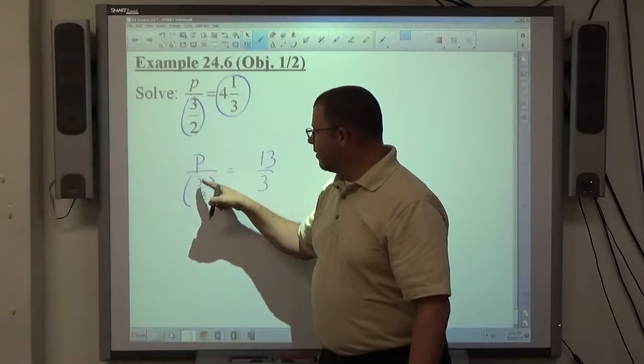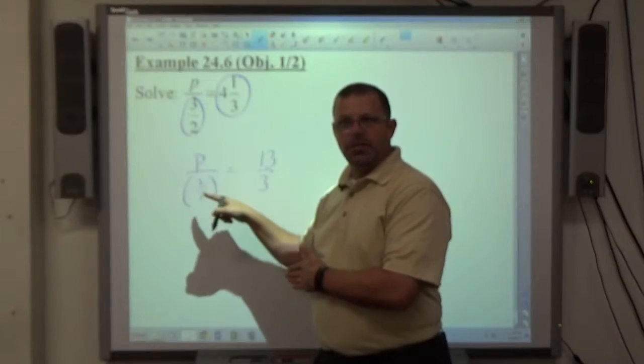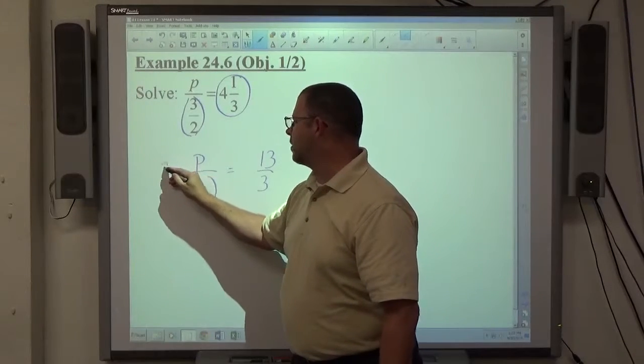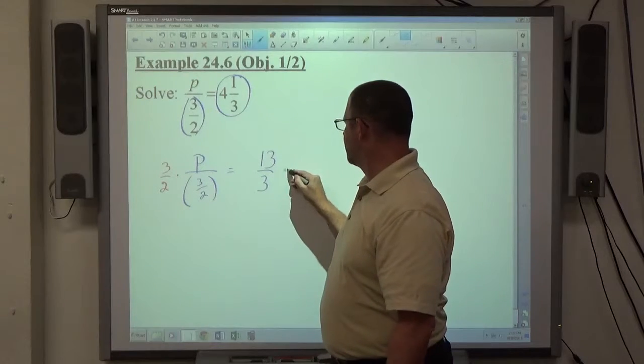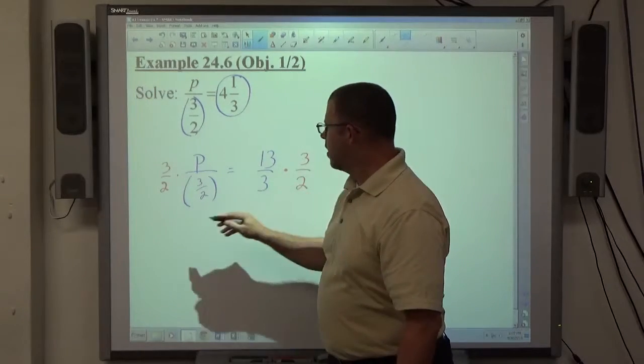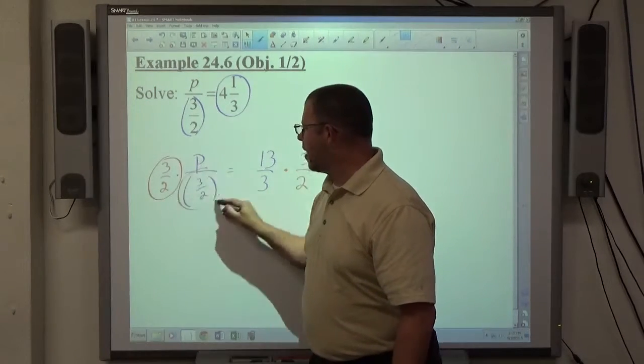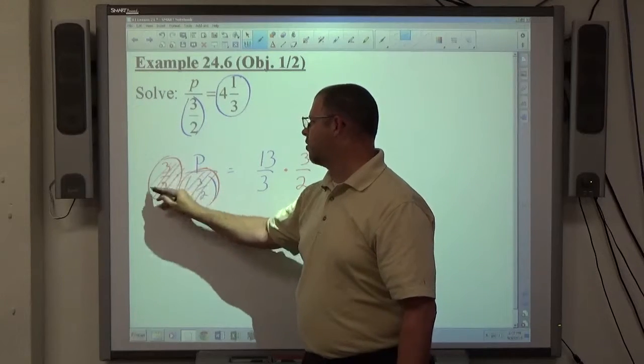What we can see here is p is being divided by a number. If the letter is being divided by a number, multiplication by the exact same number is the fix. So times 3 halves and divided by 3 halves being opposite operations are going to equal 1.